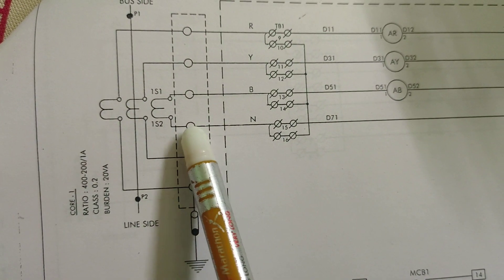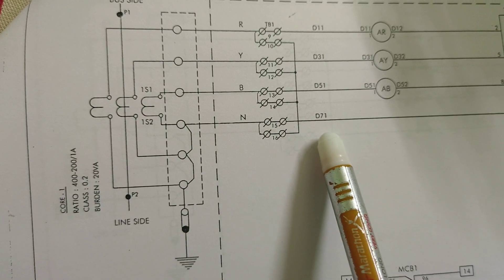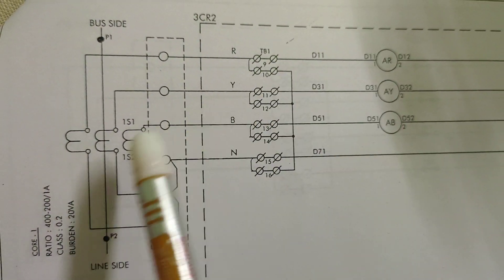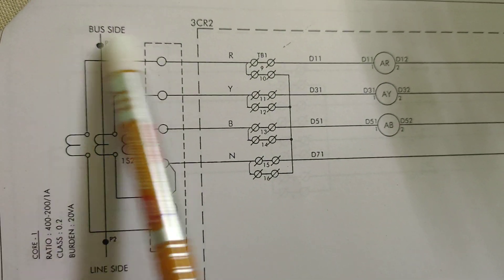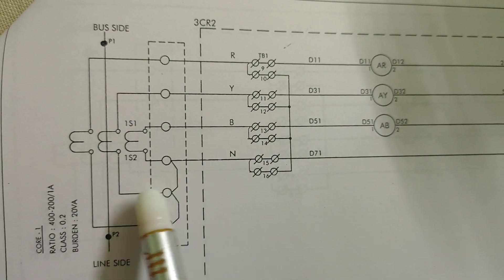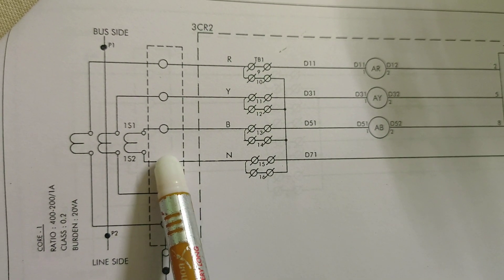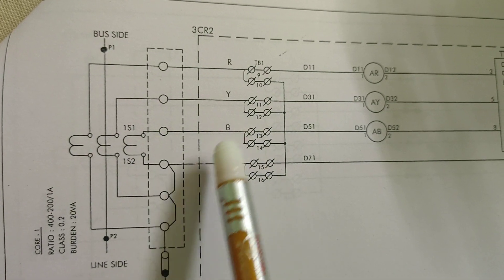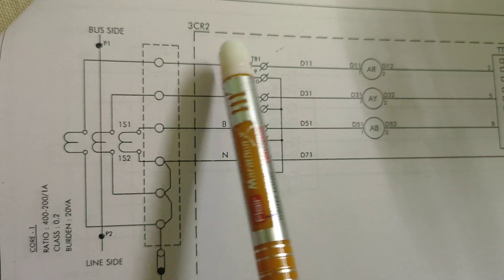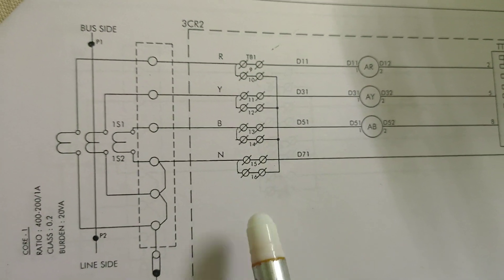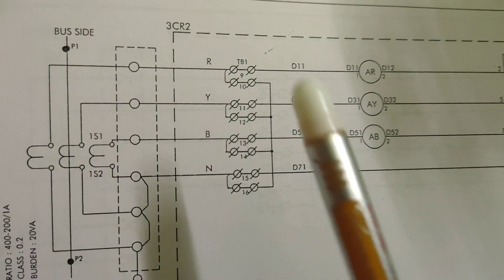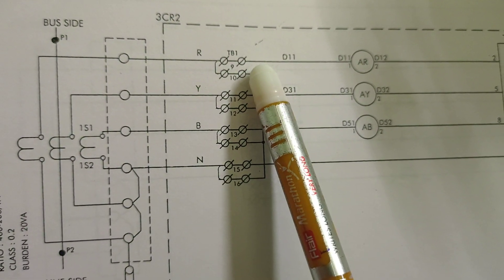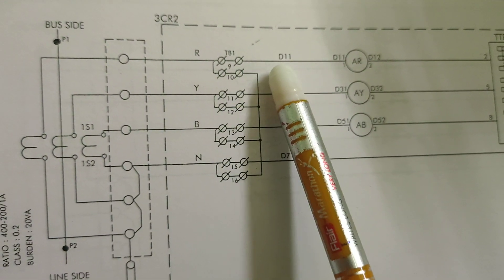One neutral is coming out from here, and the other three terminals of R phase, Y phase, and B phase along with the neutral are connected to the TB or JB — the terminal block or junction box.